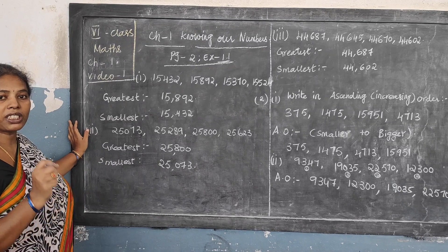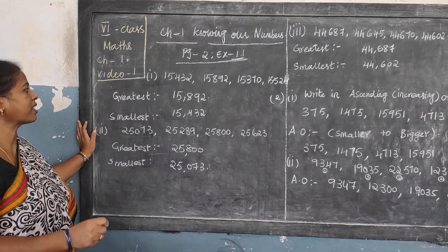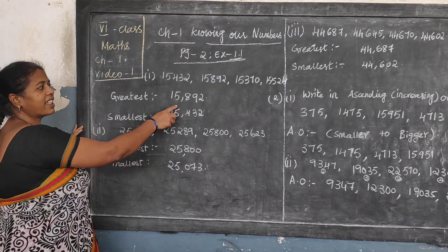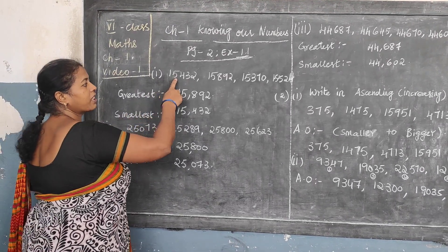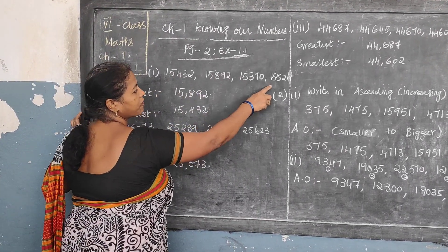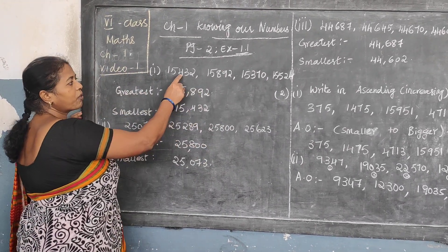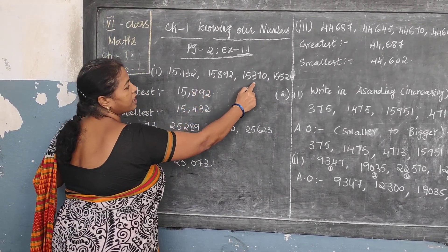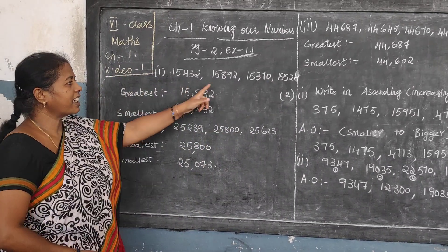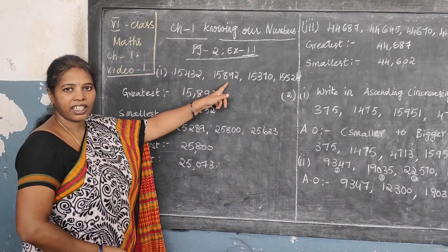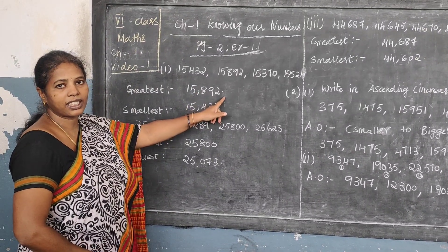From this set of numbers, they are telling you to find out the greatest as well as the smallest. Now, how will you find out the greatest? All are 15,000 only. So you check the hundreds digit: 432, 892, 370, 524. Which is greater, children? 892 is naturally greater, so 15,892 is the greatest number.